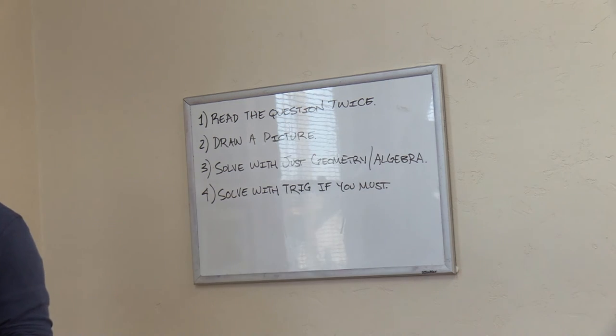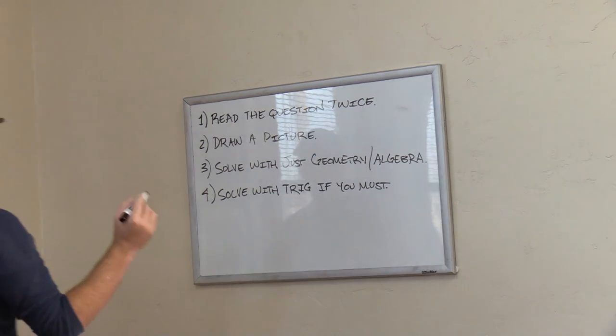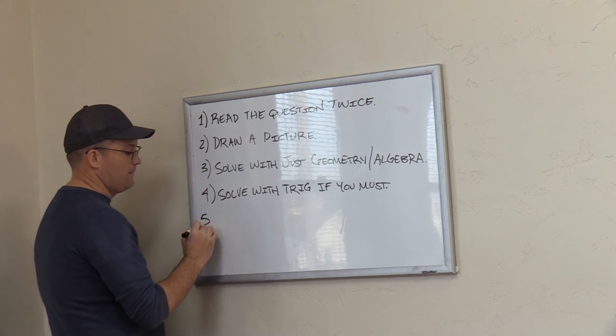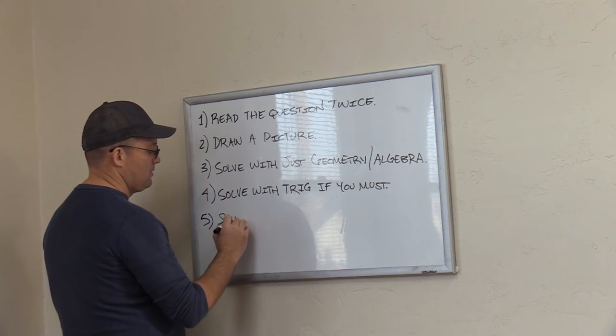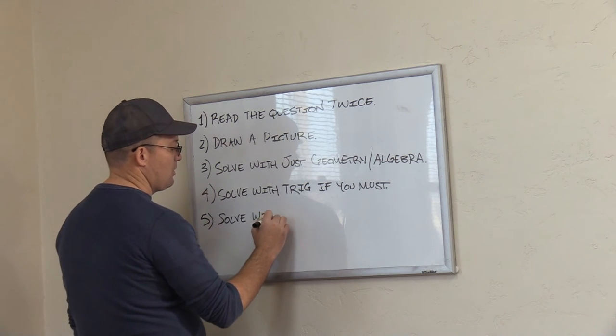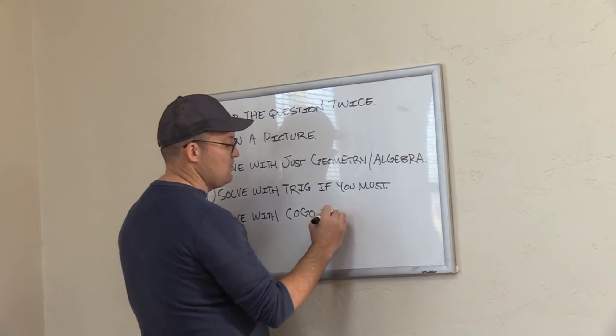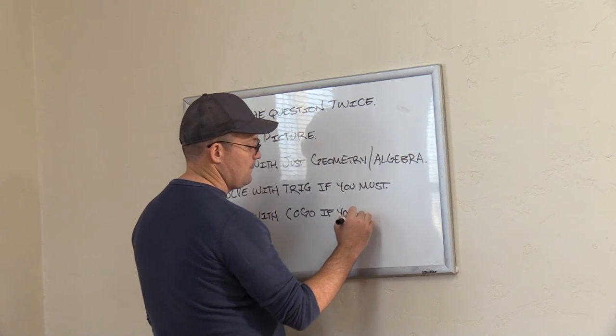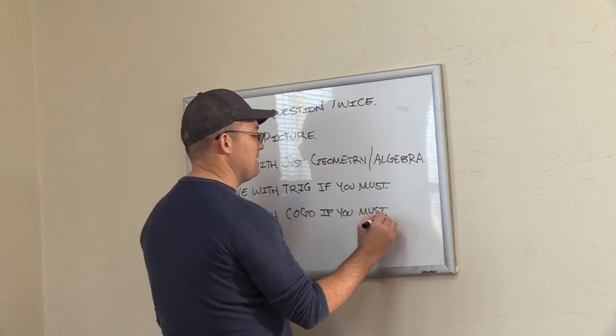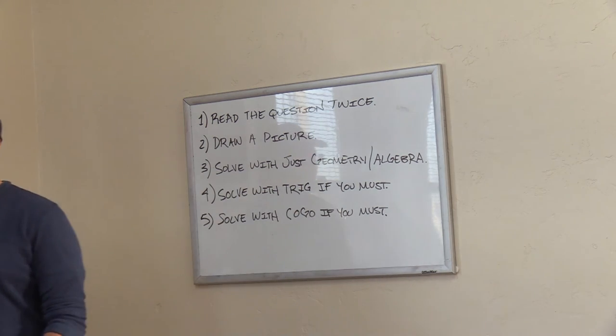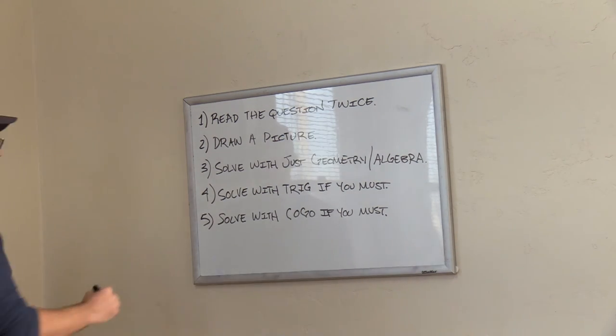And then occasionally I haven't given you a question like this, but it's on the sample exam today for the CST LSAT. The last resort: solve with COGO if you must. So if you have to use coordinate geometry, you can. But that's the order of operation that I would go through.